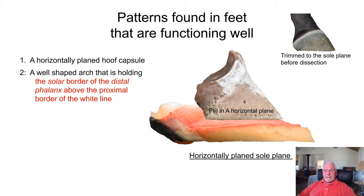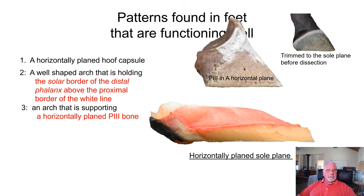The white line has been removed off of this sole body, so we're looking at the sole body and the vertical depth of the sole plane — it's fairly horizontally planed. We have a horizontally planed hoof capsule with a horizontally planed P3 bone, and an arch supporting that horizontally planed P3 bone. This is a young horse — look at the top line of this arch: it's horizontally planed, and the P3 bone was fairly close to a horizontal plane resting on top of this sole body.